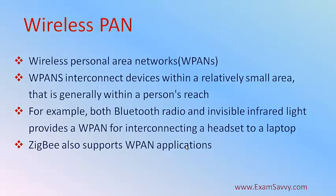First is wireless personal area network, called WPANs for short. Wi-Fi PANs are becoming commonplace as equipment designers start integrating Wi-Fi into a variety of consumer electronics. WPANs are mainly used for interconnecting devices within a small area — generally within a person's reach, a small distance. For example, Bluetooth radio and invisible infrared light rays support WPAN to connect a headset to a laptop. That is an example for WPAN.